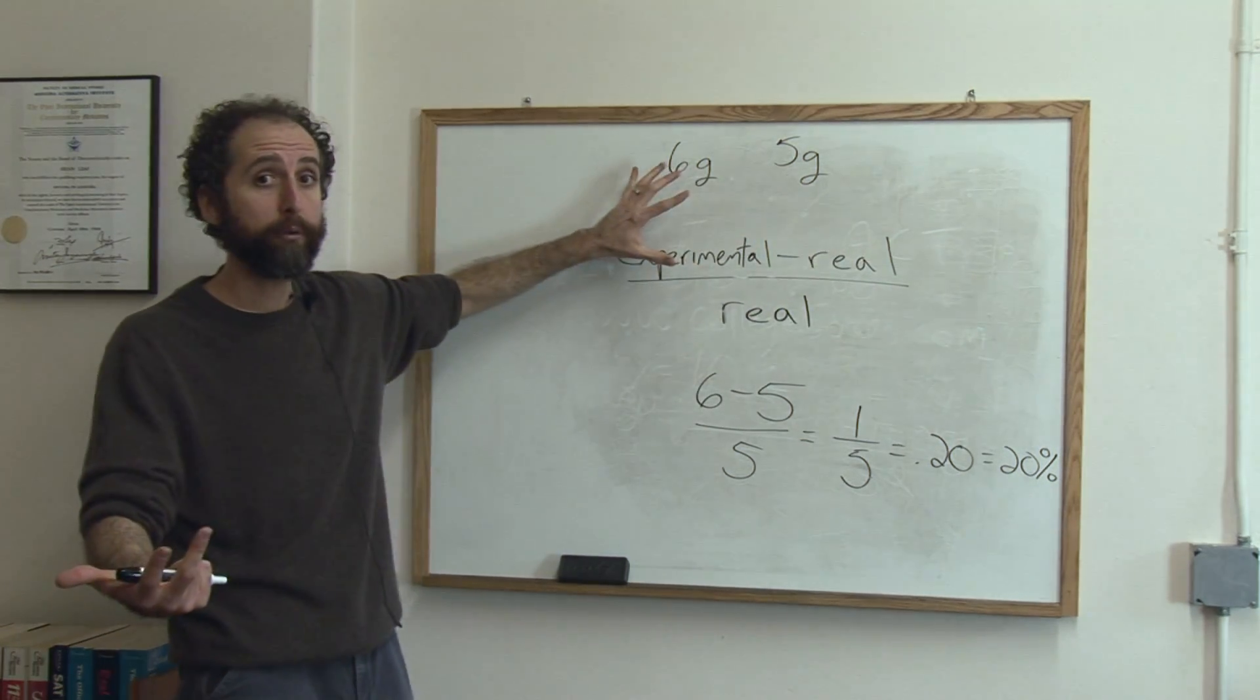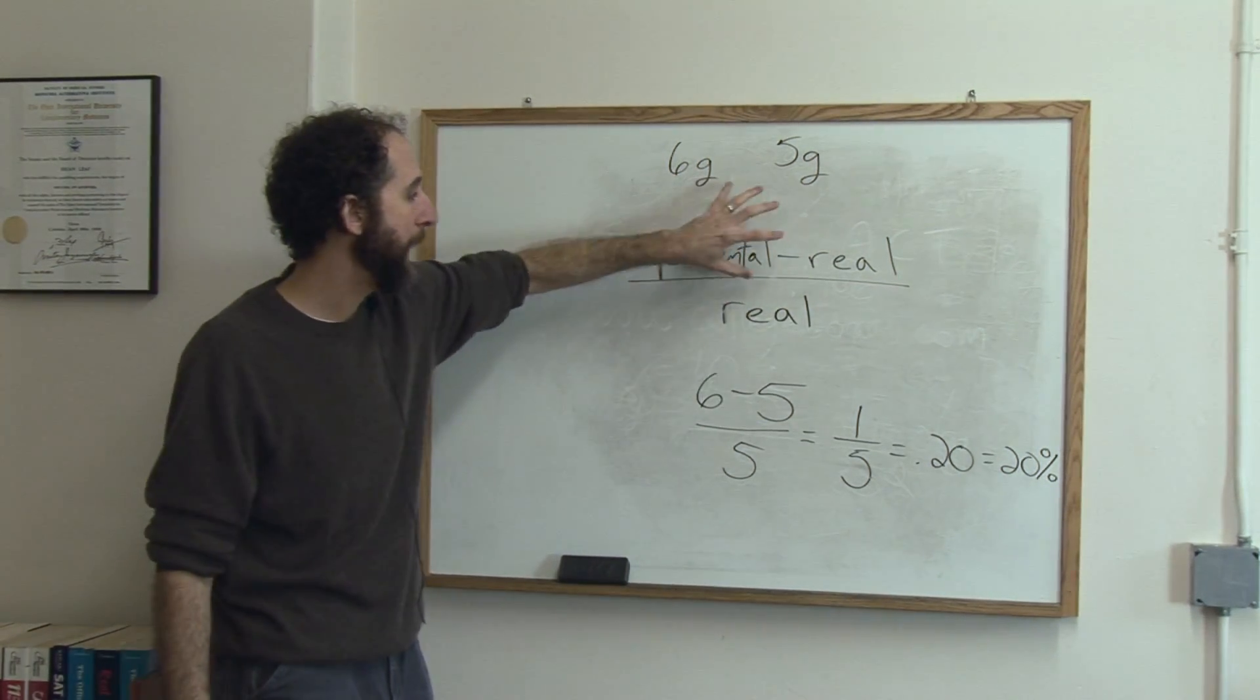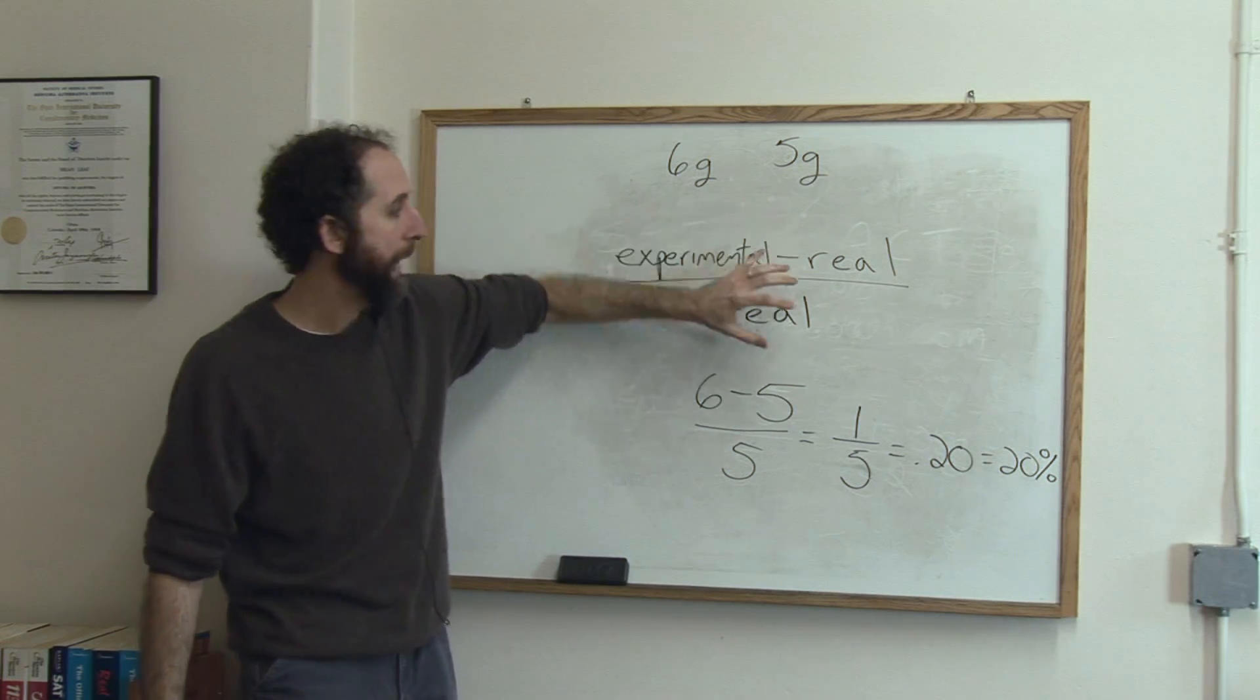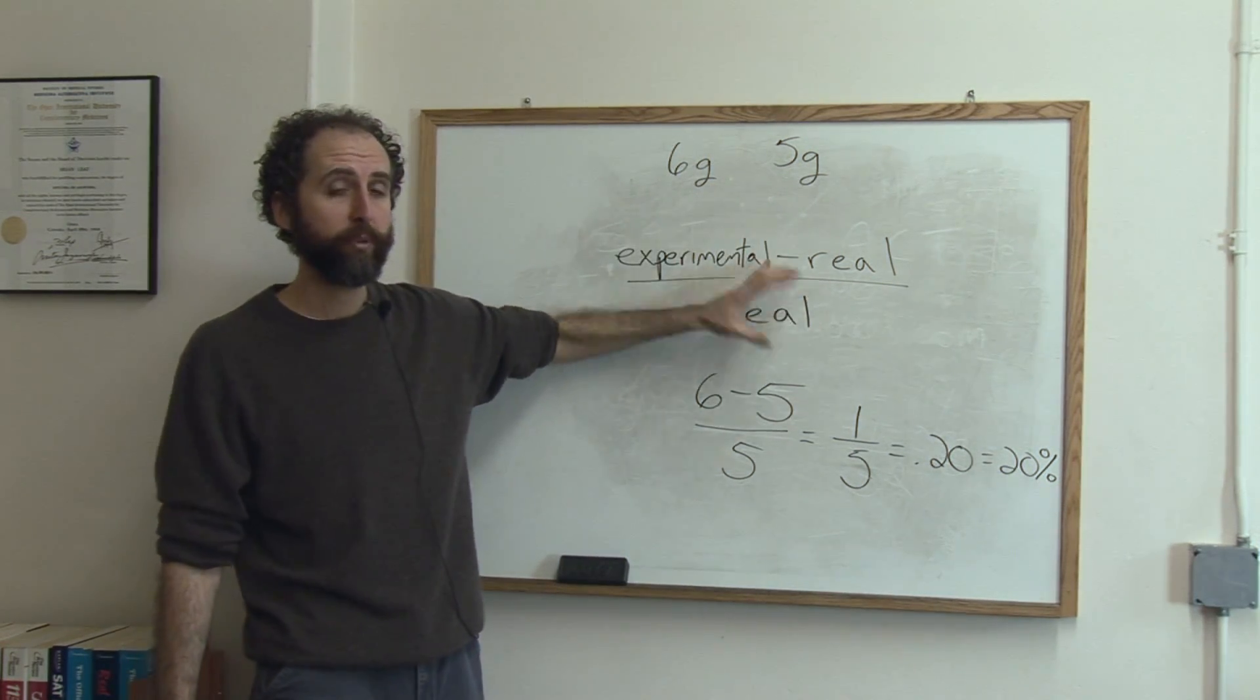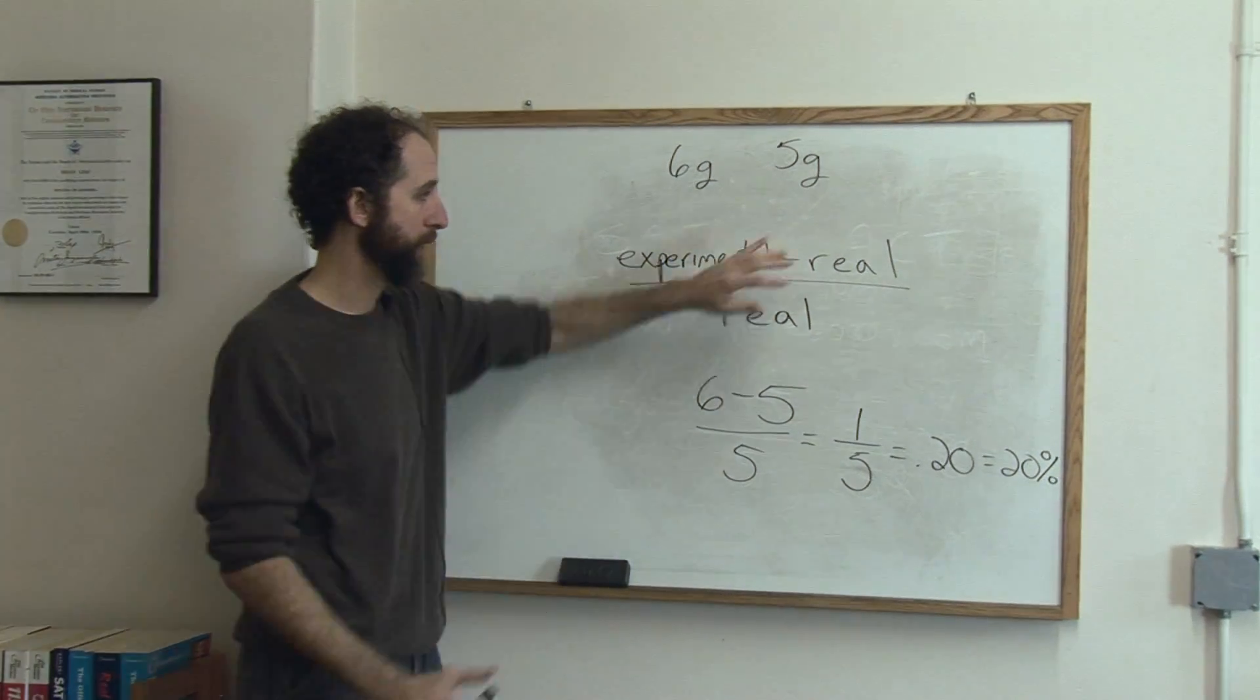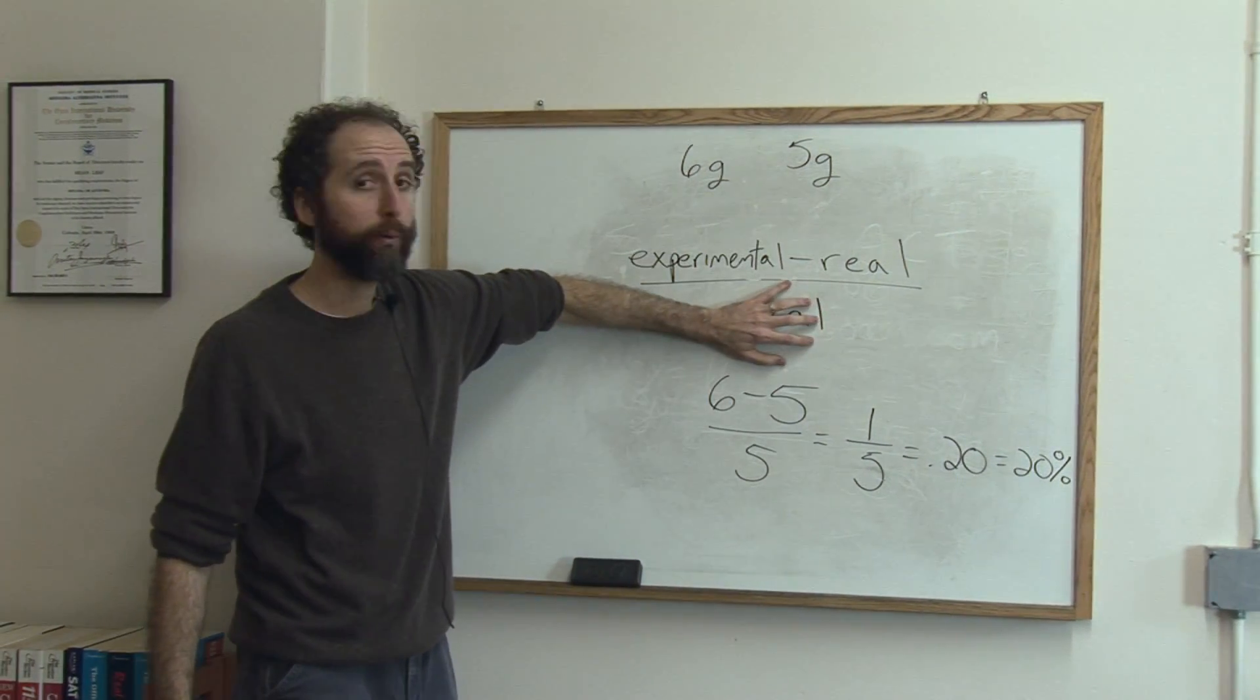So we do the absolute error. How much were you off? But then divided by the real thing. How much were you off out of the total? And that's why it's called relative error. And that's why the formula really makes sense. Just how much were you off out of the whole thing.